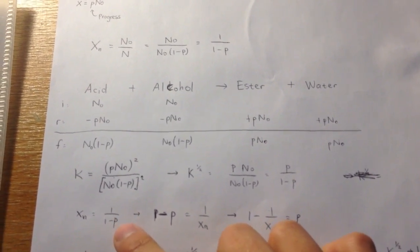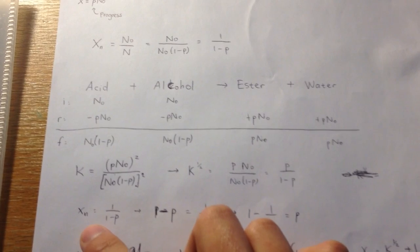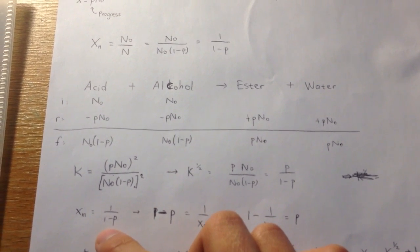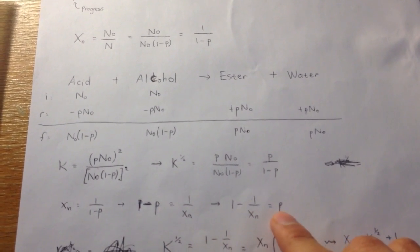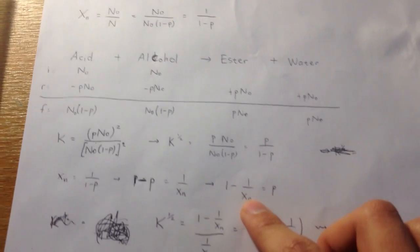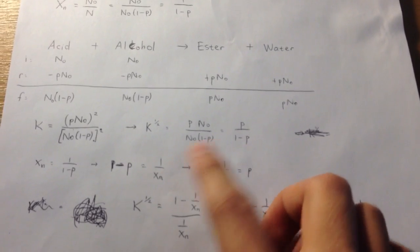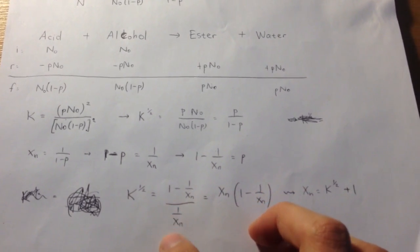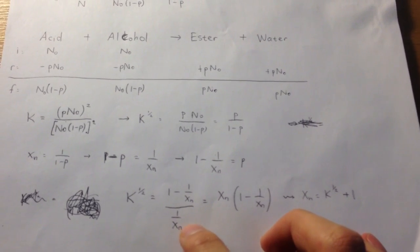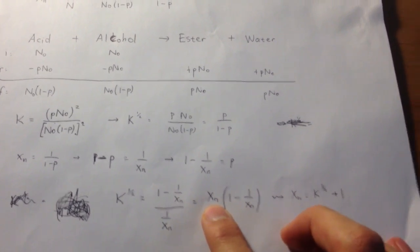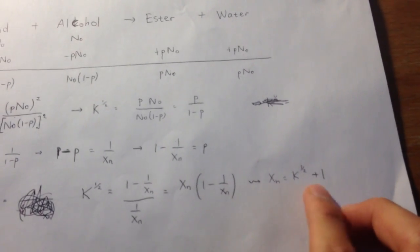From previous equation, Xn equals 1 over (1 minus P). We can make it into P equals 1 minus 1 over Xn. Substitute P in here, so we get like this. And I can rewrite the 1 over Xn here times Xn, so I get the equation from the lecture slides.